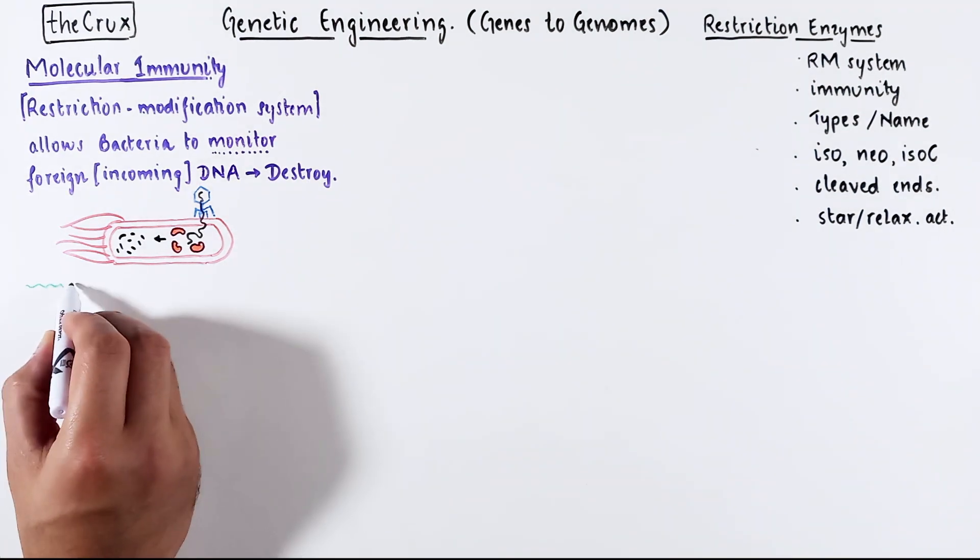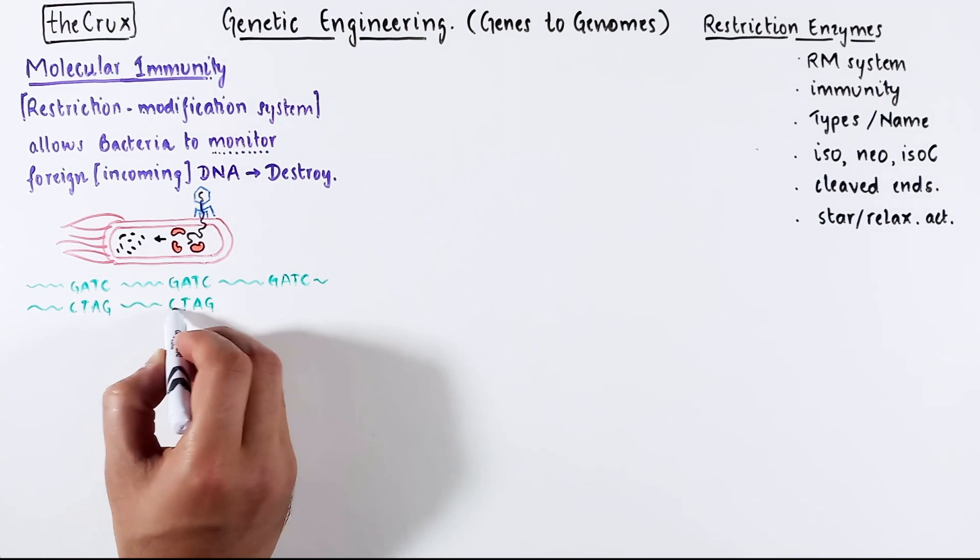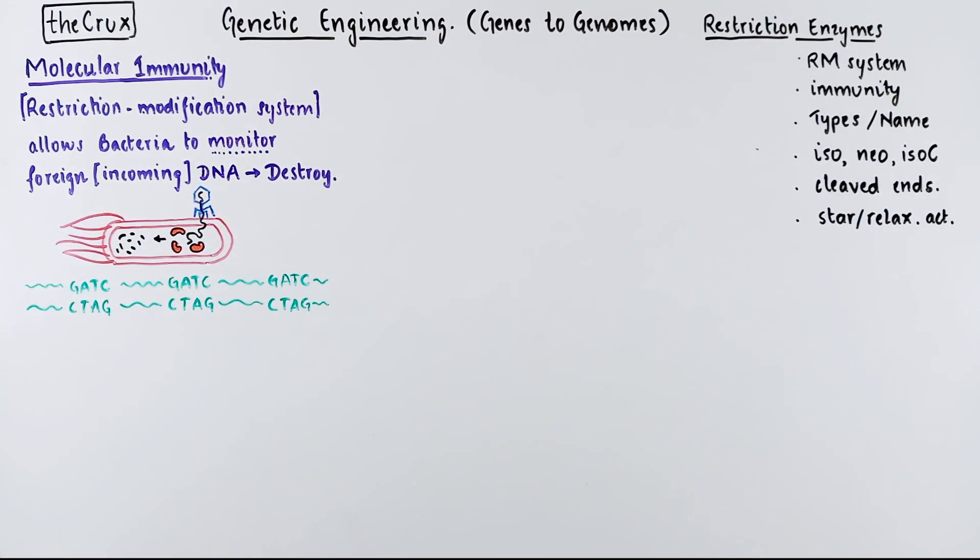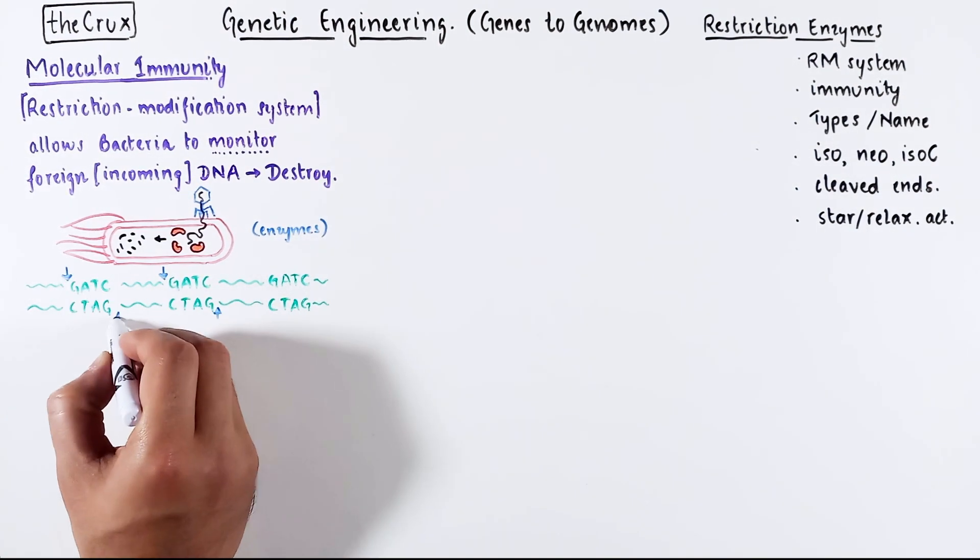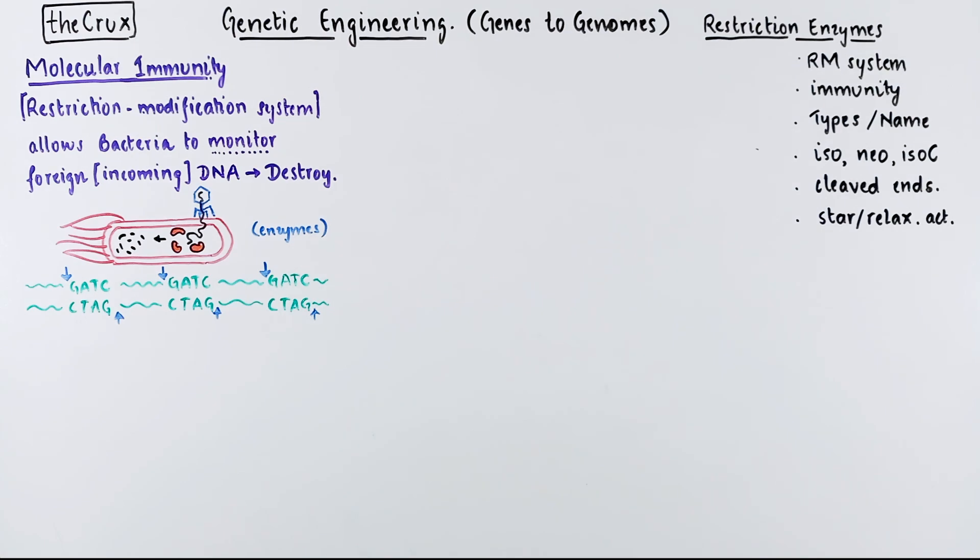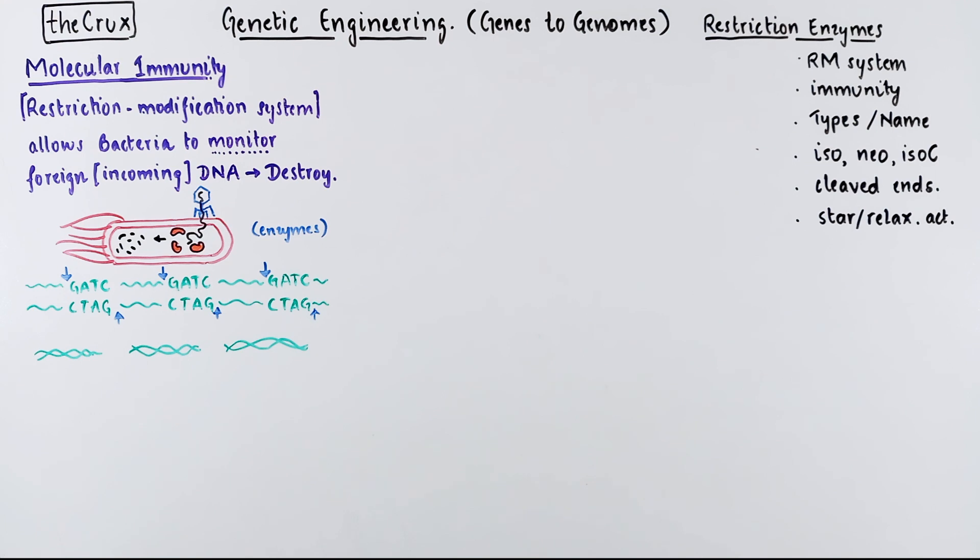Imagine this is viral DNA which is injected and it contains a short four bases, GATC in its DNA. Once this viral DNA is inside the bacteria, certain bacterial enzymes will find this GATC sequence and cut around the GATC. As a result, the viral DNA is chopped into smaller pieces and the bacteria does not get infected.